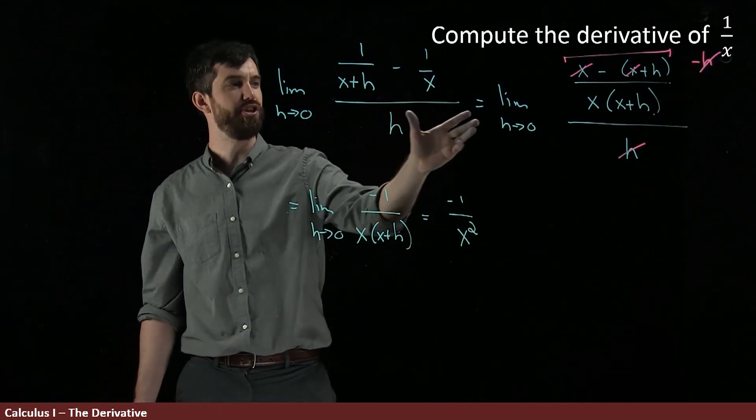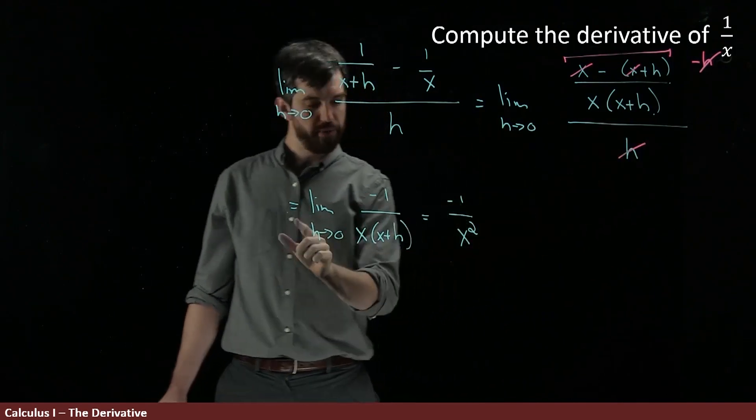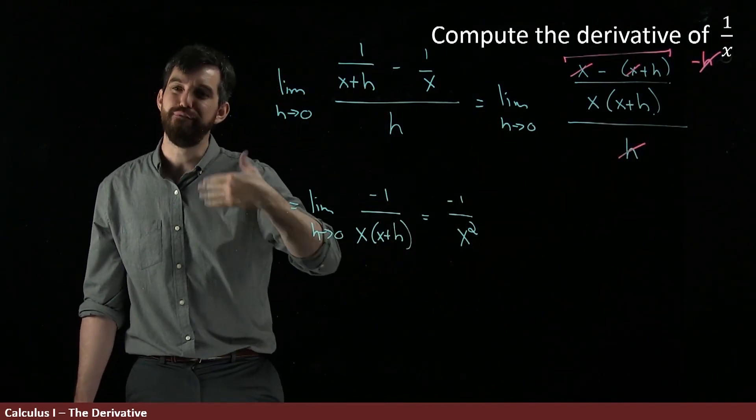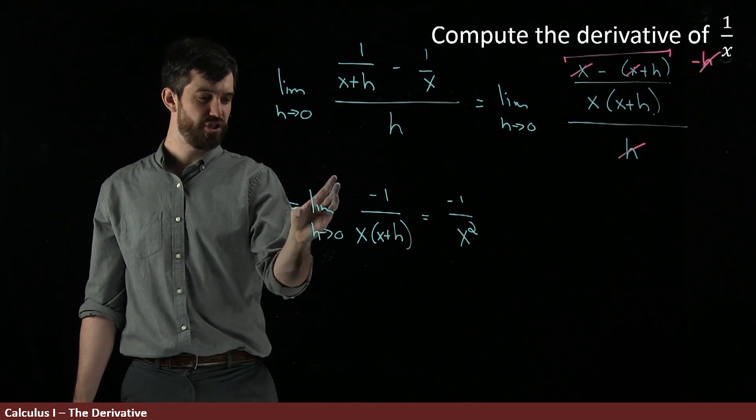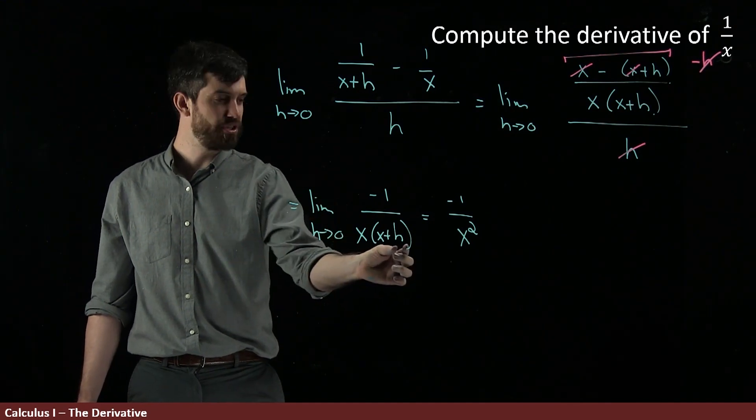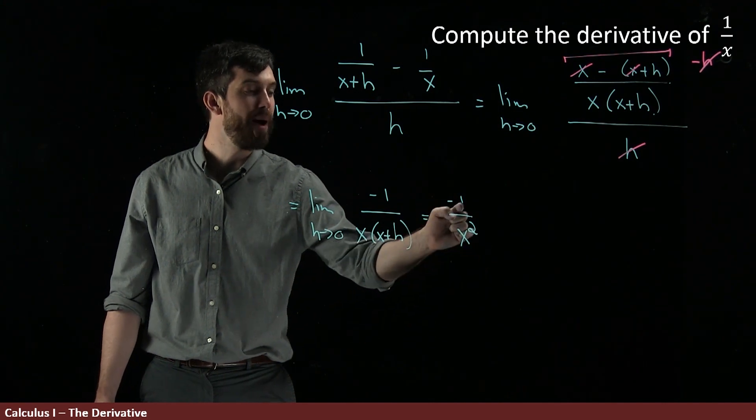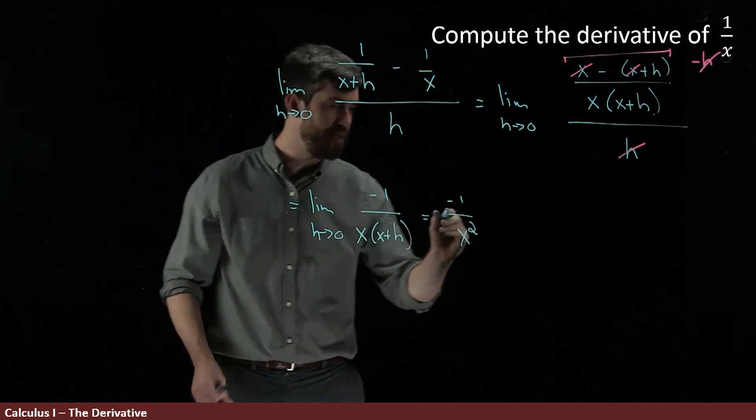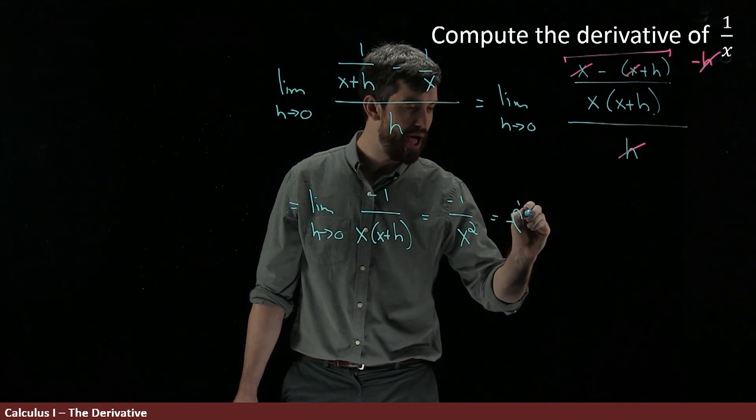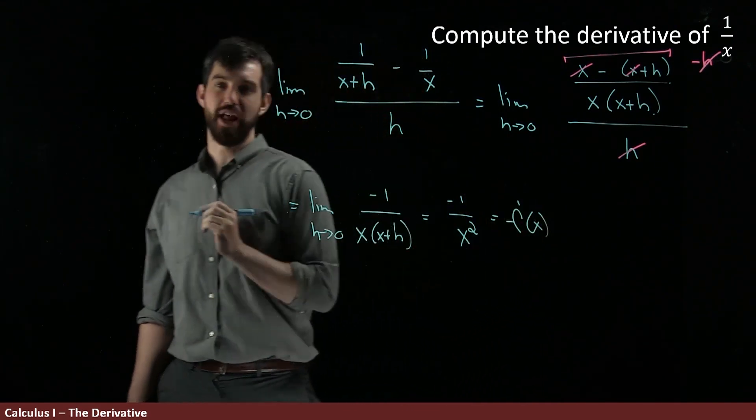Notice this final step here is the only time I do not put a limit. I always do limit of my expression equals limit of my expression equals limit of my expression. And then this step here, I'm evaluating the limit, distributing it through, I'm sending my h to zero. And so I get rid of the limit sign at this final step here and write minus one over x squared. And so I claim that this is equal to f'(x).